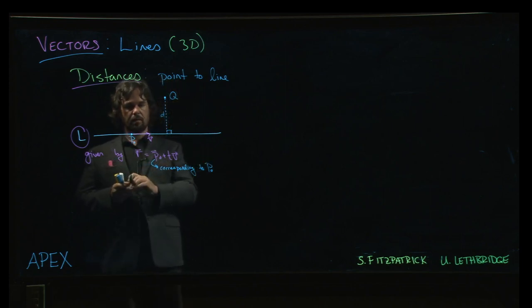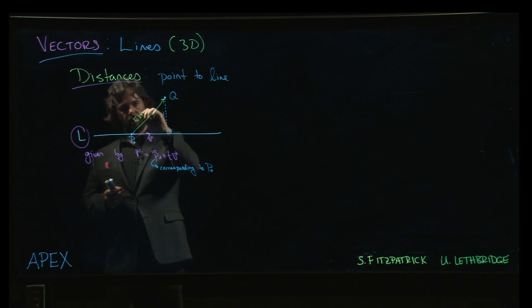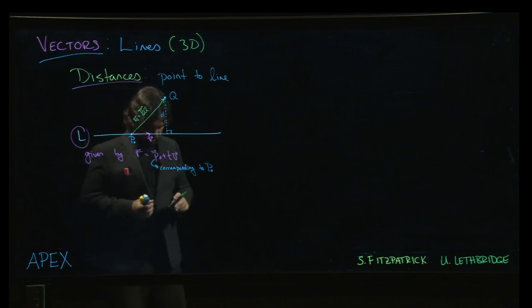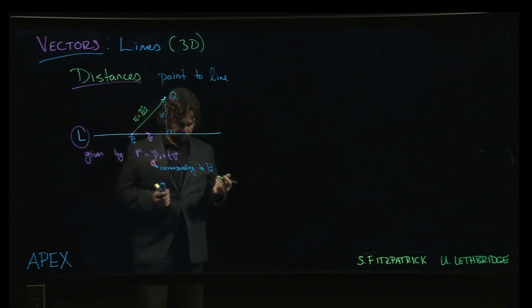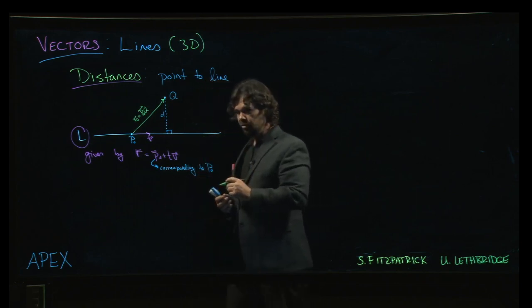Now I also have another vector I can construct, which is this vector here. Call it W. So W will be the vector from P-naught to Q. And so now we want to figure out the distance. And there's a couple of ways you can do this.